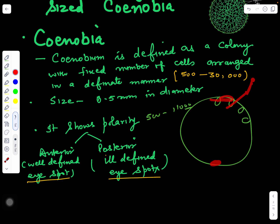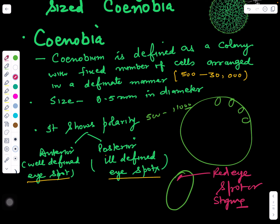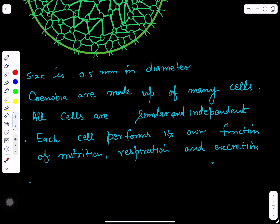Each cell has a red eye spot or stigma on one side which can sense light. The part of the coenobium on the anterior side has well-defined red eye spots or stigma that can sense more light. The part on the posterior side has poorly defined eye spots or stigma that can sense less light. This is about its occurrence.